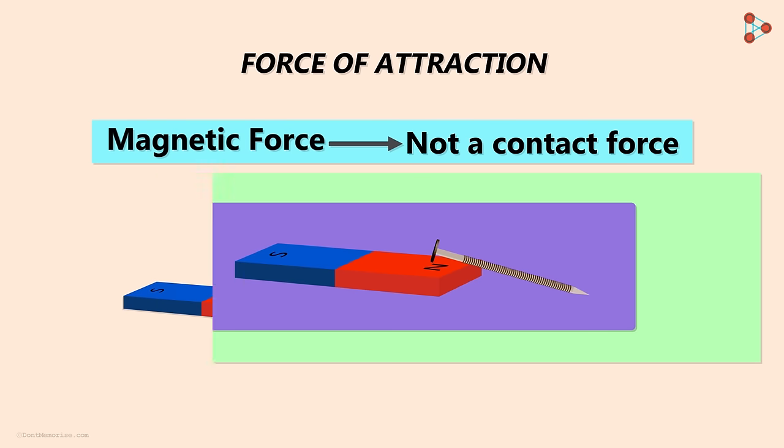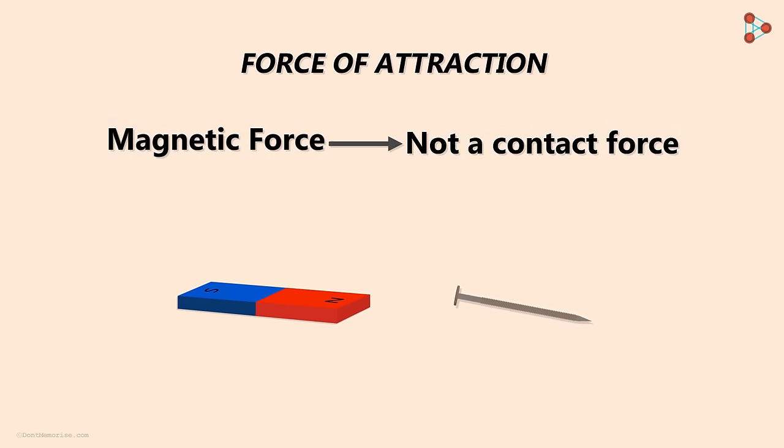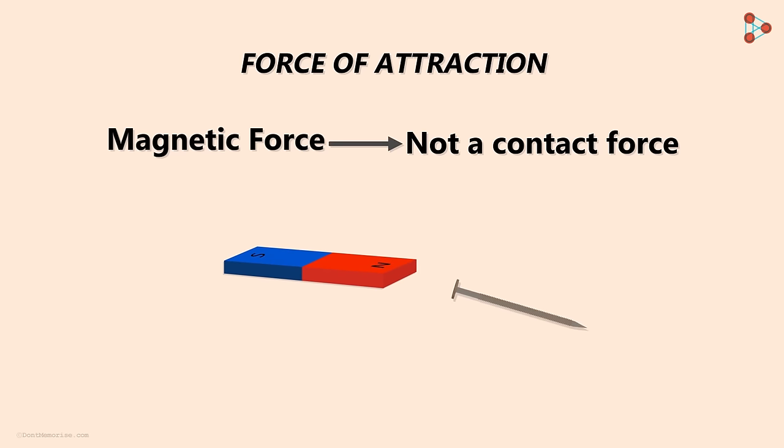To understand this better, we bring this magnet close to the nail and move it slightly up in the air. You will find a slight movement in the iron nail as well. This means that the iron nail is under the influence of a magnetic force even though it's not in contact with the magnet.